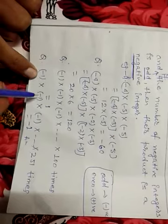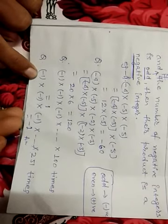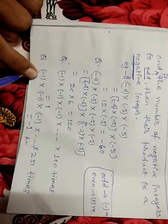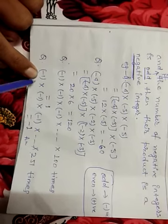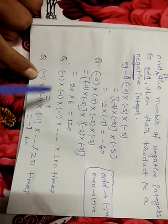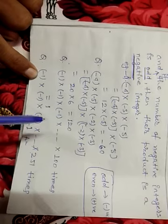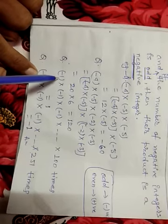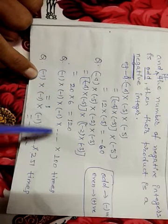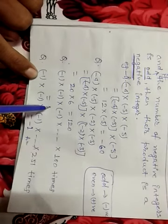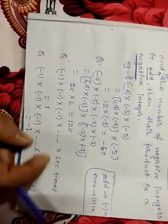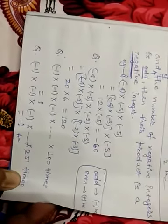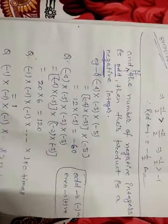When 1 is multiplied any number of times, we get the same integer, that is 1. 1 को कितनी बार भी multiply करेंगे तो 1 ही आएगा result. यहां number of negative integers की संख्या even है तो positive, अगर odd रहेगा तो negative. Thank you for visiting this video. These chapters will be continued in the next video. Thank you.